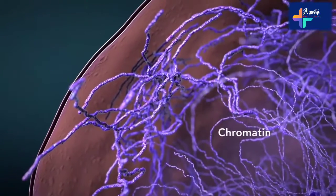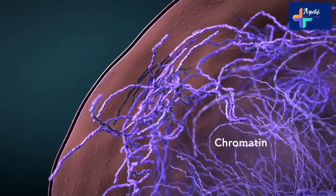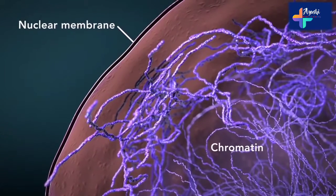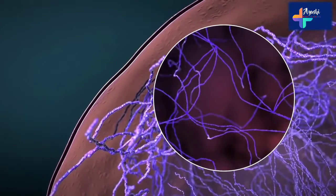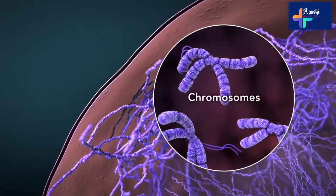Chromatin is the tangled spread out form of DNA found inside the nuclear membrane. When a cell is ready to divide, DNA condenses into structures known as chromosomes.